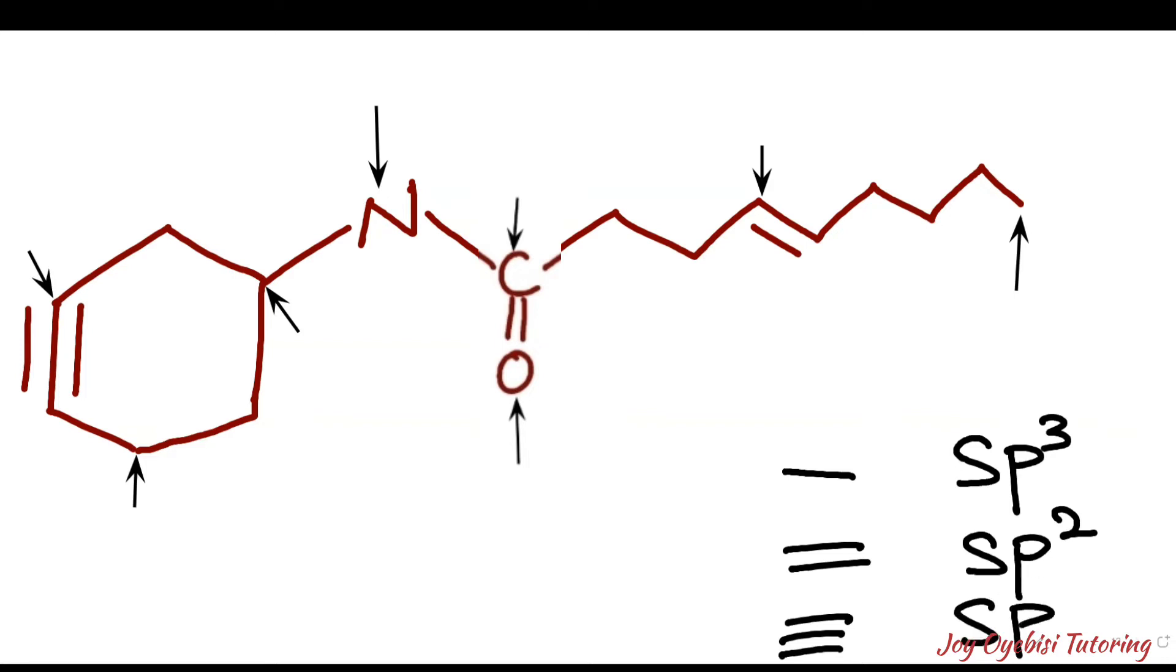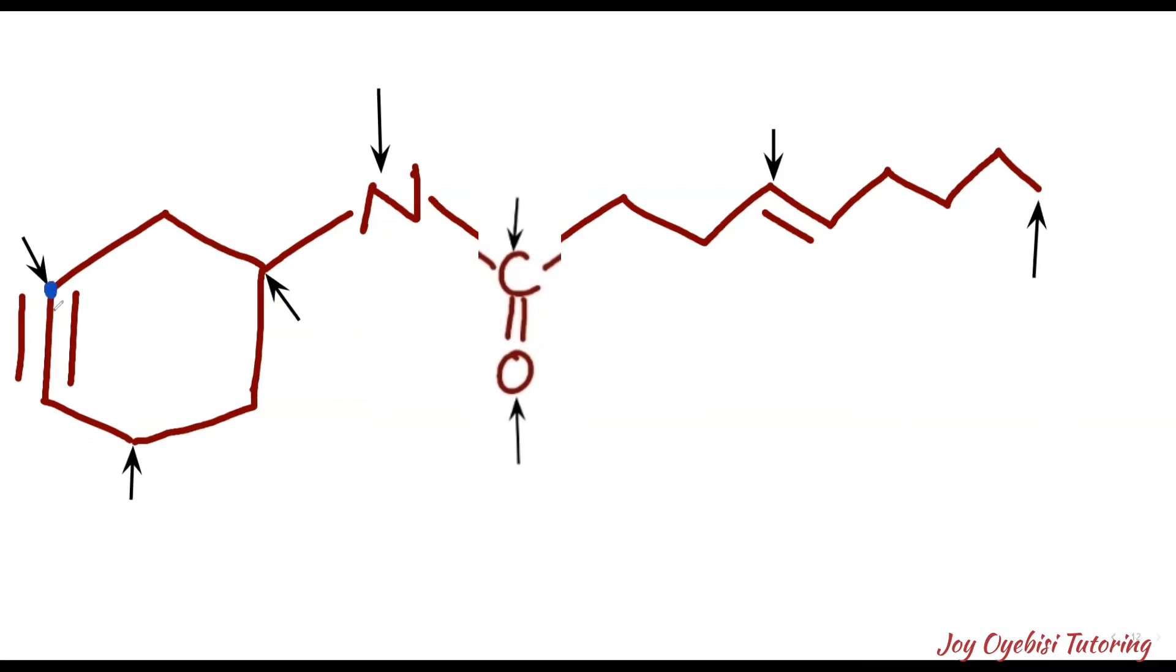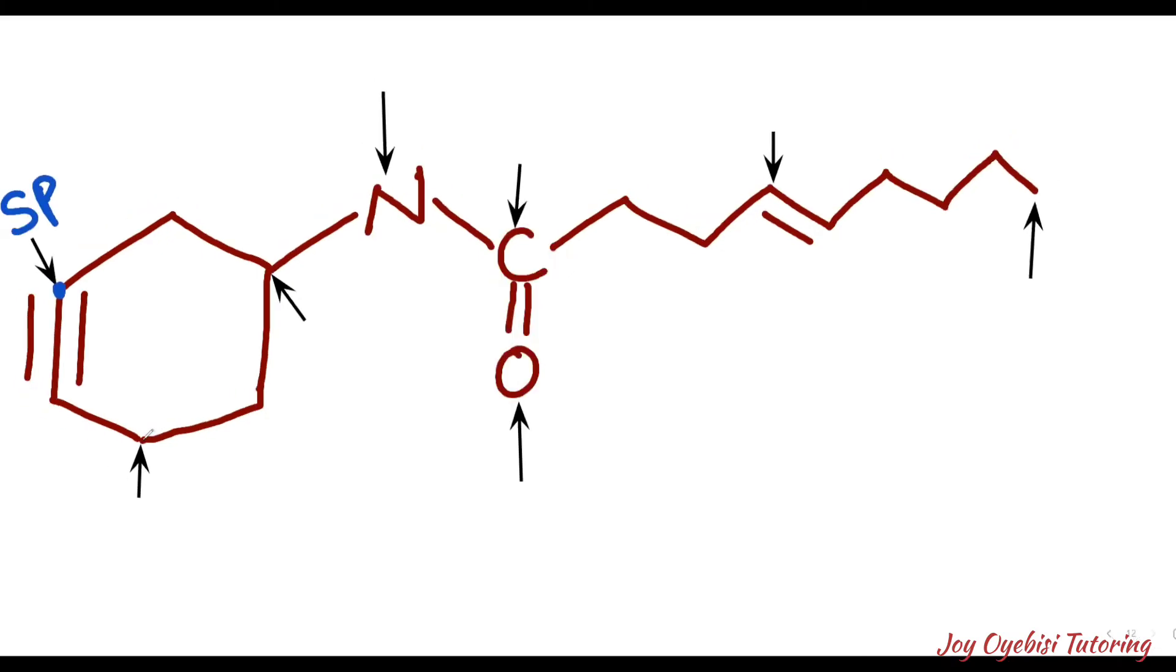So if we use this method, we're going to easily identify these hybridizations in this compound. This carbon here is triple bonded, and since it's triple bonded, this is going to be sp hybridization. This one here is single bonded, it's going to be sp3 hybridized.